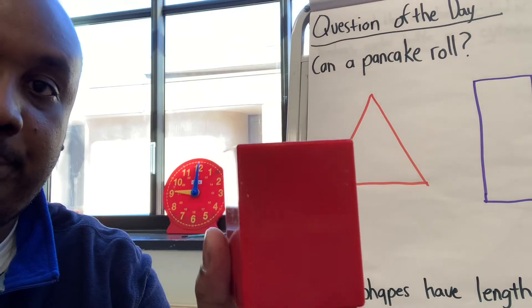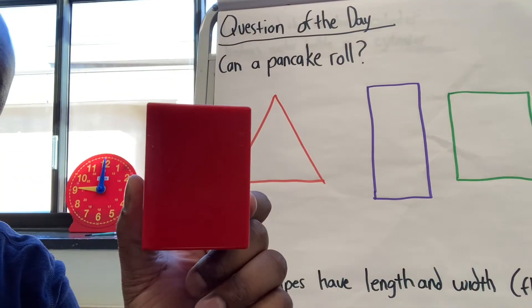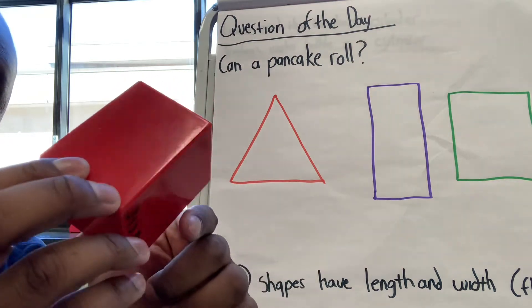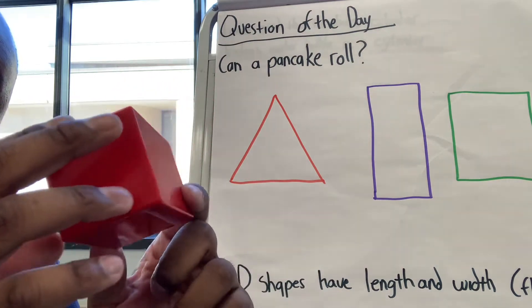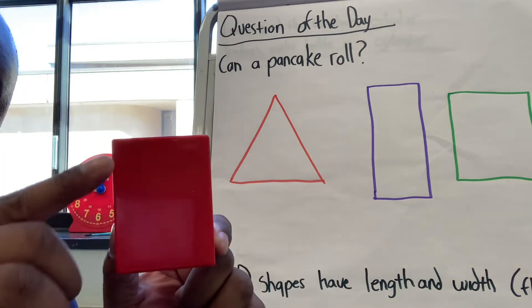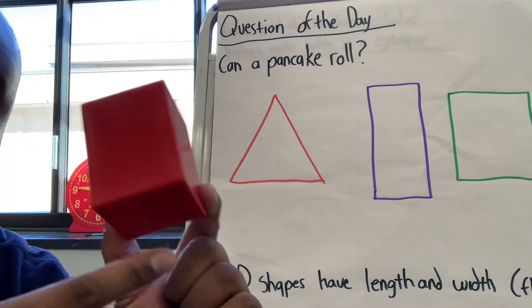What about this shape? What shape does it look like? It looks like a rectangle until I turn it. This is 3D. It's called a cuboid. A cuboid has many faces and many edges. It has a face at the top and a face at the bottom.